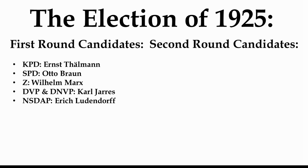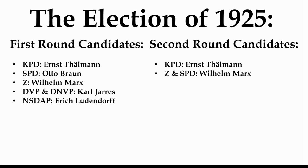What happened? The SPD decided that Otto Braun didn't have a very good chance of winning, so they put their vote behind Wilhelm Marx instead. The KPD went full steam ahead with Ernst Thälmann. But this left a problem for the left, because there were now two candidates on the left. On the right, they swapped Karl Liarres for Paul von Hindenburg. The NSDAP had hardly got any votes, so Ludendorff didn't make it through to the second round.